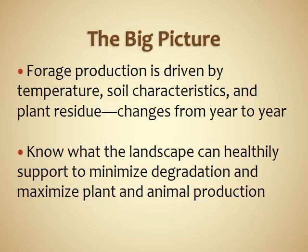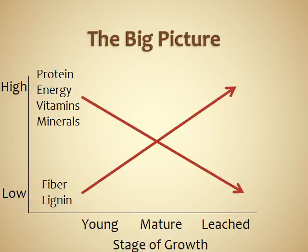Forage production is driven by temperature, soil characteristics, and plant residue, and this changes from year to year. You need to know what the landscape can healthily support to minimize degradation and maximize plant and animal production. Plants are higher in protein, energy, vitamins, minerals, and water when young, and low in structural carbohydrates like cellulose and lignin. As plants mature, protein, energy, vitamins, and minerals decrease while fiber and lignin increase, so the more mature a plant gets, the lower its quality.